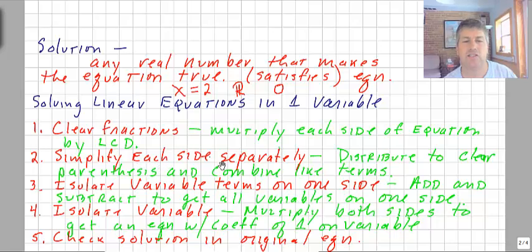Then simplify each side of the equation separately. You might have to distribute to clear parentheses and combine like terms. Simplify each side separately: distribute, clear parentheses, combine like terms.